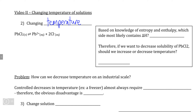Even though solubility equilibria don't normally consider delta H, understanding where delta H is important in order to look at how to shift the equilibrium system. If we consider the effect of entropy on this reaction, we would expect that entropy would favor the dissociation reaction because we have a greater number of product particles than reactants, and our products also exist in a more disordered state of matter.